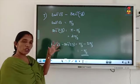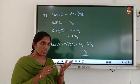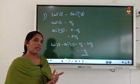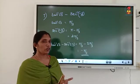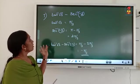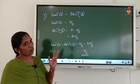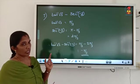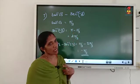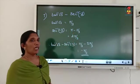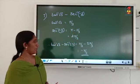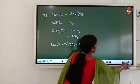Is it clear? For sin inverse, cosec inverse, and tan inverse: if x is negative, write negative of acute angle. For cos, cot, and sec inverse: if negative, write pi minus acute angle. If positive, just write the acute angle.